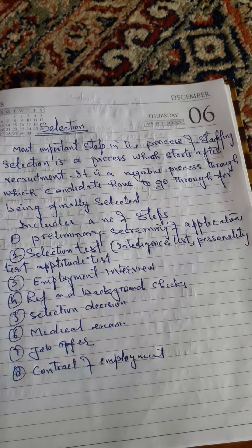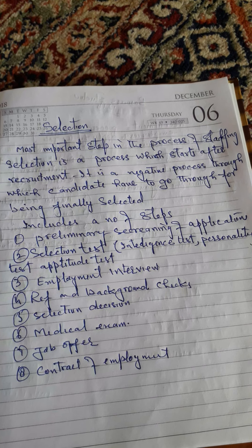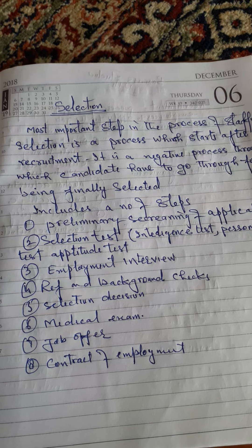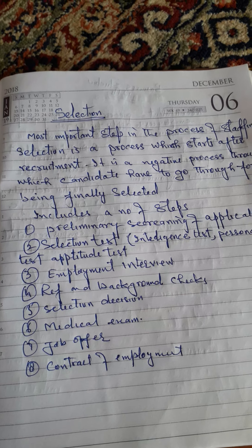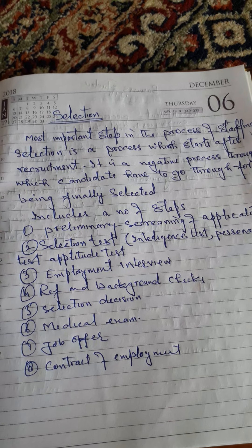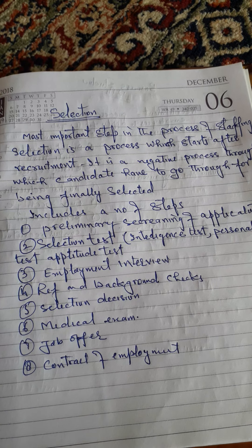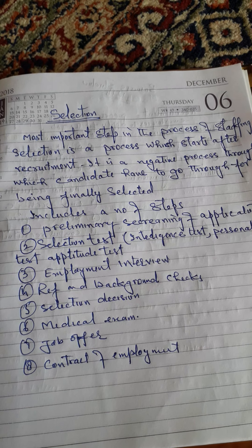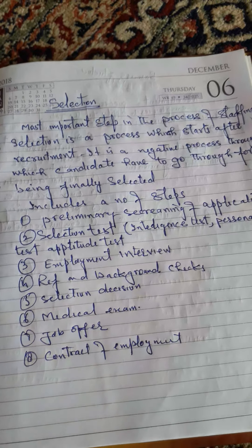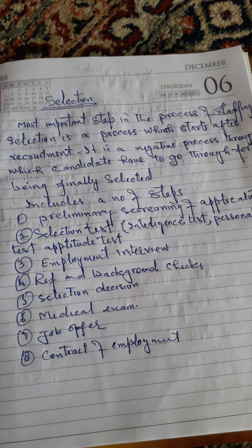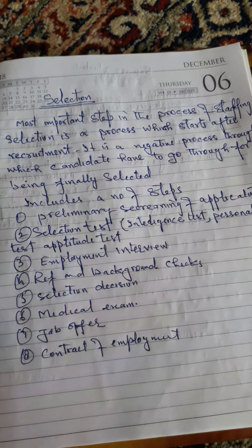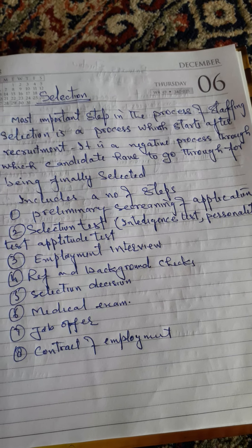The selection process includes a number of steps. Number one is preliminary screening of applications. When the candidates have filled their applications, we have to scrutinize them — whether the applicants are eligible, whether they have the required qualification, whether they have completed all the formalities. Some candidates may not be fit for the job or their applications may be incomplete; they will be traced out at the screening level.